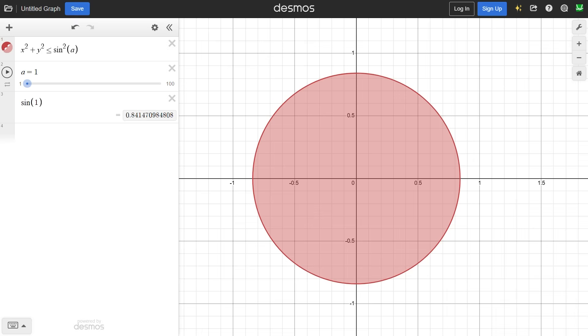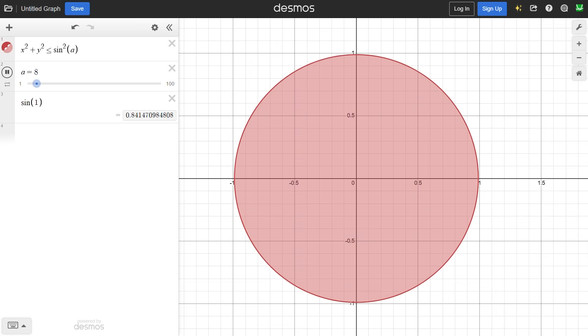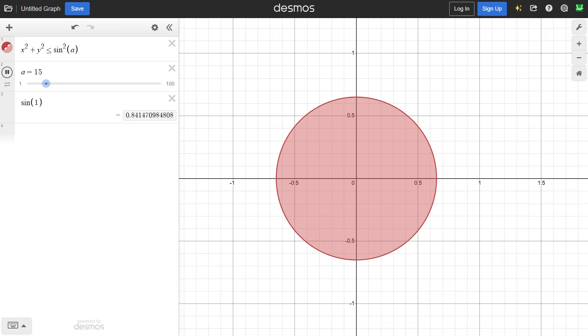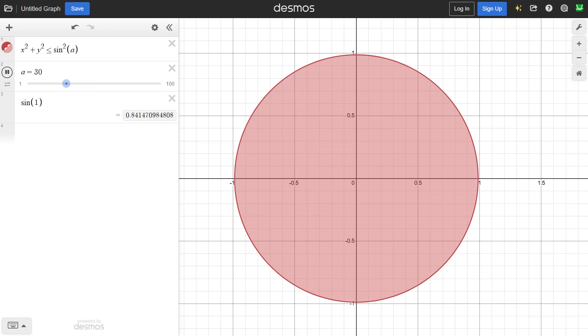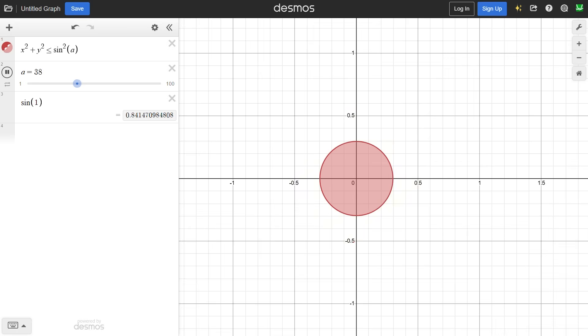But now let's change a. Now it's 2, 3, 4, and so on. You can see that the circle is kind of doing whatever it wants. You might be able to tell that it's sort of fluctuating, expanding, then shrinking, but other than that, there's pretty much no pattern.